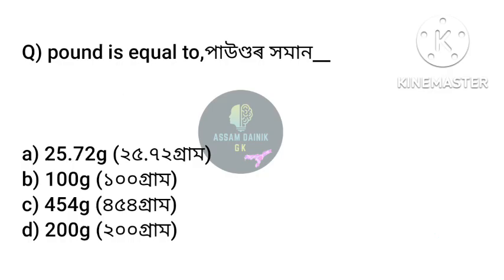First question: one pound is equal to how many grams? Answer: Option C, 454 grams. Correction: 119 grams. One pound equals 119 grams.